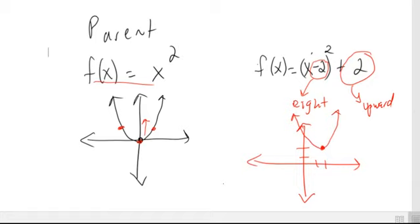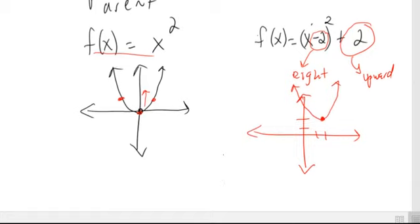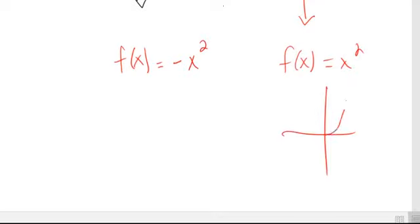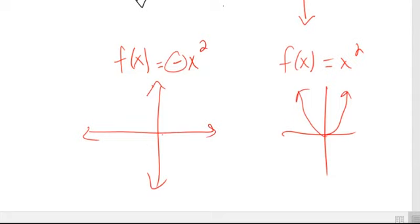We're just basically getting a sketch. If you have a negative in front of the x squared, the parent function looks like a standard parabola, but the negative is going to cause the graph to open downward — so that negative causes the graph to flip down.